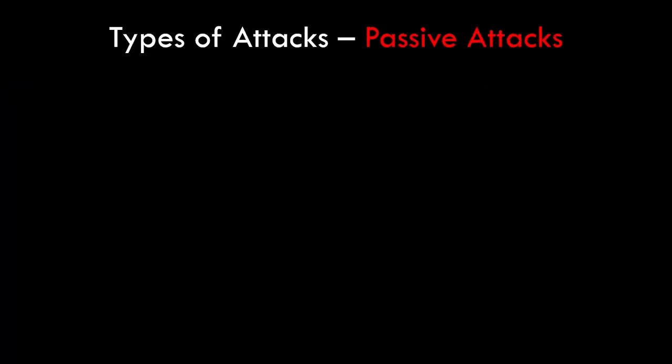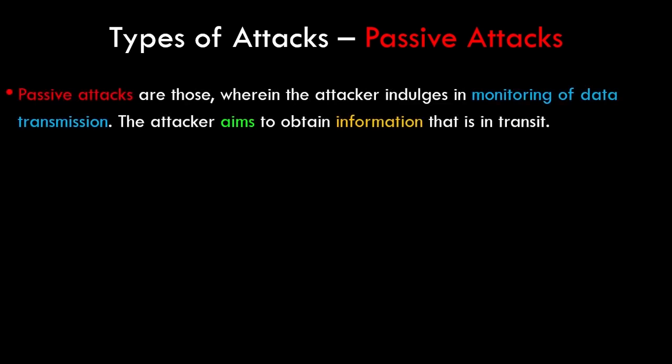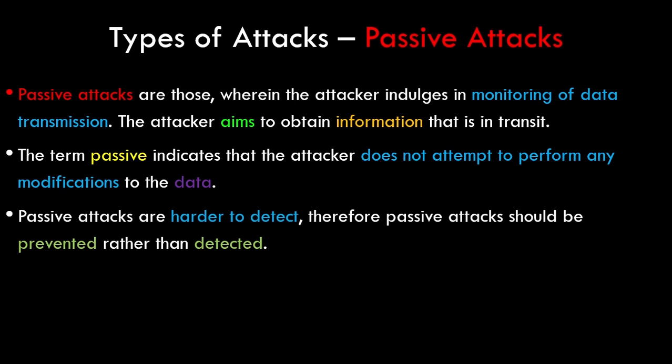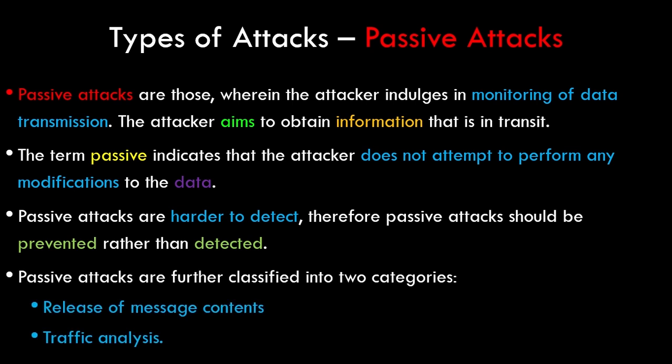Now that we've seen how active attacks work, let's look at passive attacks. Passive attacks are those where the attackers indulge in monitoring of data transmission. In these types of attacks, the attacker usually does not modify the message but is only interested in what the message is about. These attacks are harder to detect as there is no change made to the original message. Passive attacks are classified into two categories: release of message content and traffic analysis.